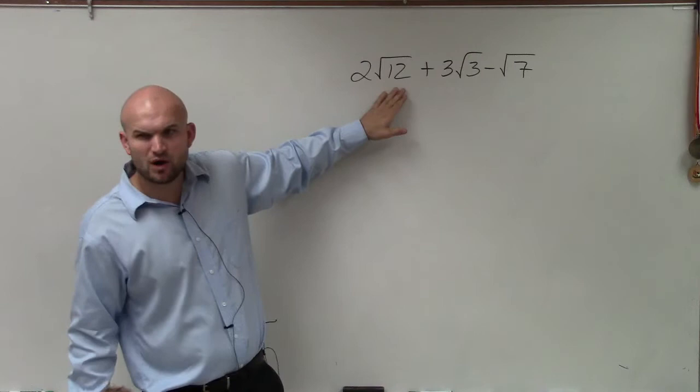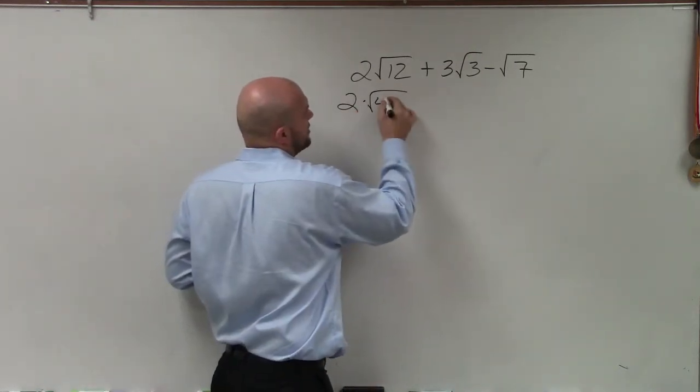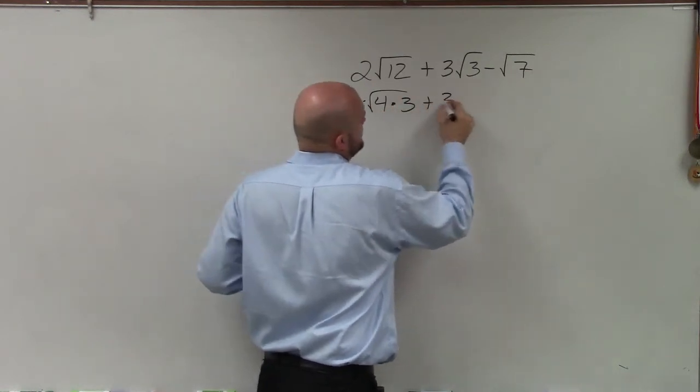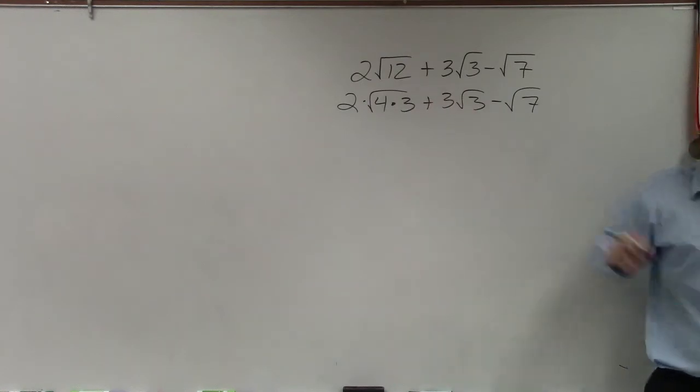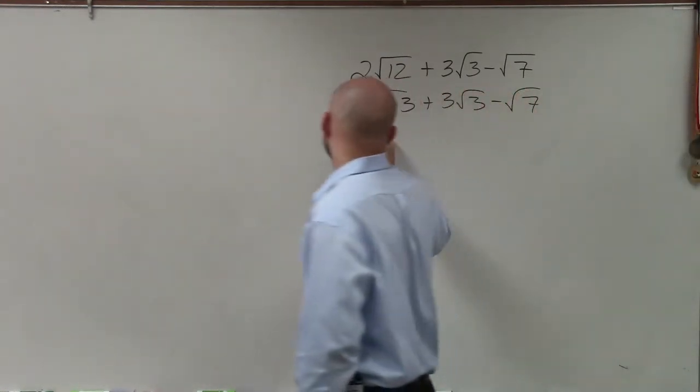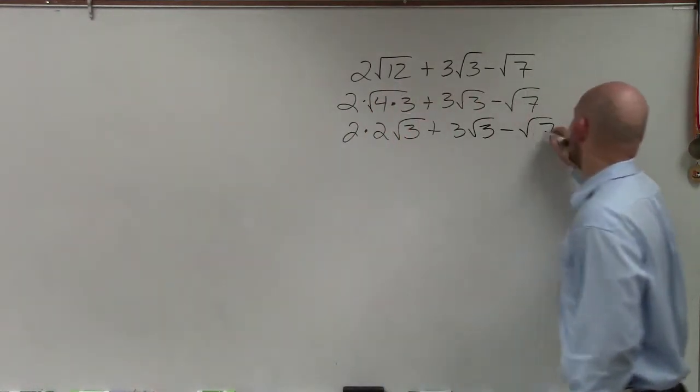However, the square root of 12, can I take a square number that goes into that? Yeah, I can do 2 times the square root of 4 times 3, plus 3 times square root of 3 minus the square root of 7. Well, I know that the square root of 4 is 2. So this is 2 times 2 times square root of 3, plus 3 times square root of 3 minus square root of 7.